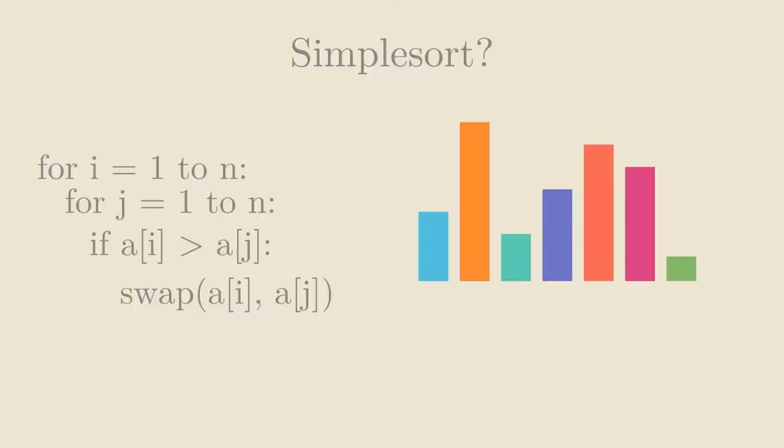Just look at the symmetry. Two nested for loops from 1 to n, and a nicely symmetrical conditional swap inside.